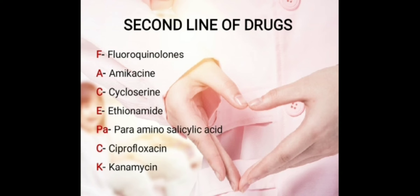PA for Para-aminosalicylic acid. Opposite to that house there is someone called para-aminosalicylic acid — her name is Sally. C for Ciprofloxacin — she was just flossing her teeth. And K for Kanamycin. So the full FACE PACK mnemonic: F for Fluoroquinolones, A for Amikacin, C for Cycloserine, E for Ethionamide — Ethionamide is the person he meets — opposite to that house is Para-aminosalicylic acid, she is flossing — Ciprofloxacin, and K for Kanamycin.